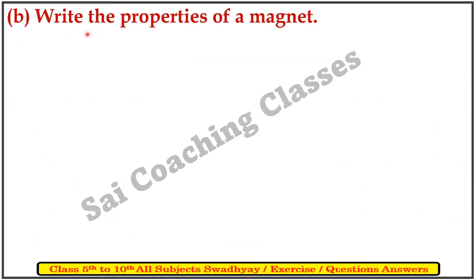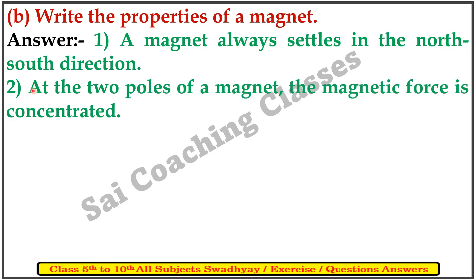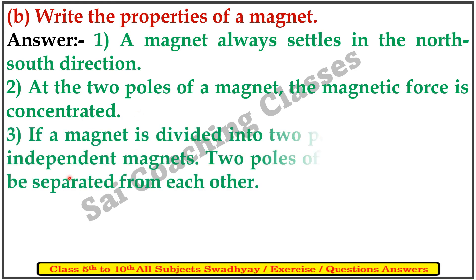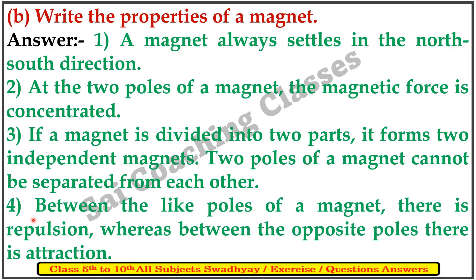B. Write the properties of a magnet. Answer: First, a magnet always settles in the north-south direction. Second, at the two poles of the magnet, the magnetic force is concentrated. Third, if a magnet is divided into two parts, two independent magnets are formed, and the two poles cannot be separated from each other. Fourth, between the like poles of a magnet there is repulsion, whereas between the opposite poles there is attraction.